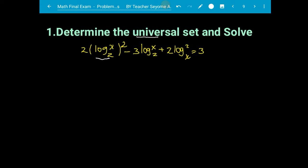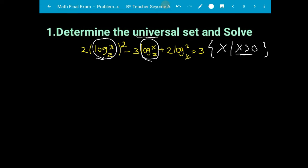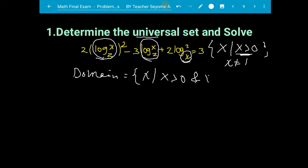The domain means inside the bracket: log x base two, or logarithm of x base two — they are similar. In these two cases the domain of the logarithm function says x greater than zero. But in this case there is a subscript x, so x cannot be one. So the domain or universal set of this equation is x greater than zero and x different from one.